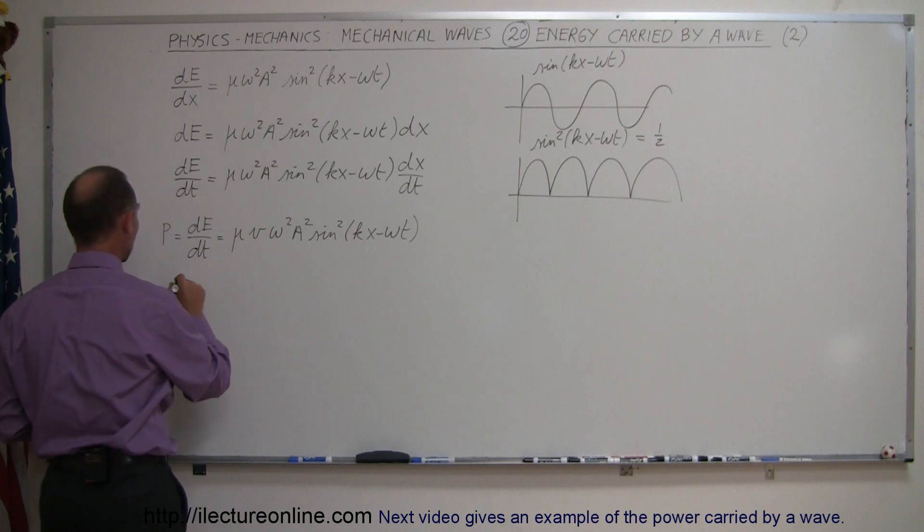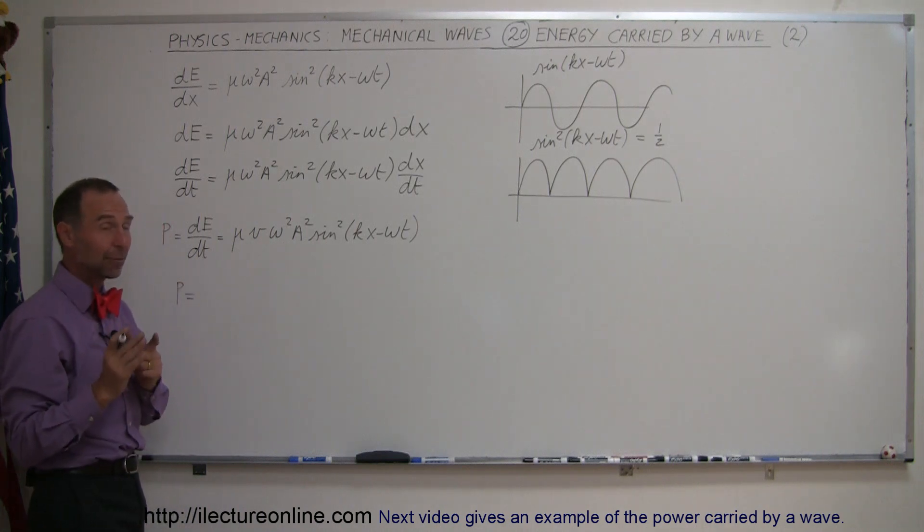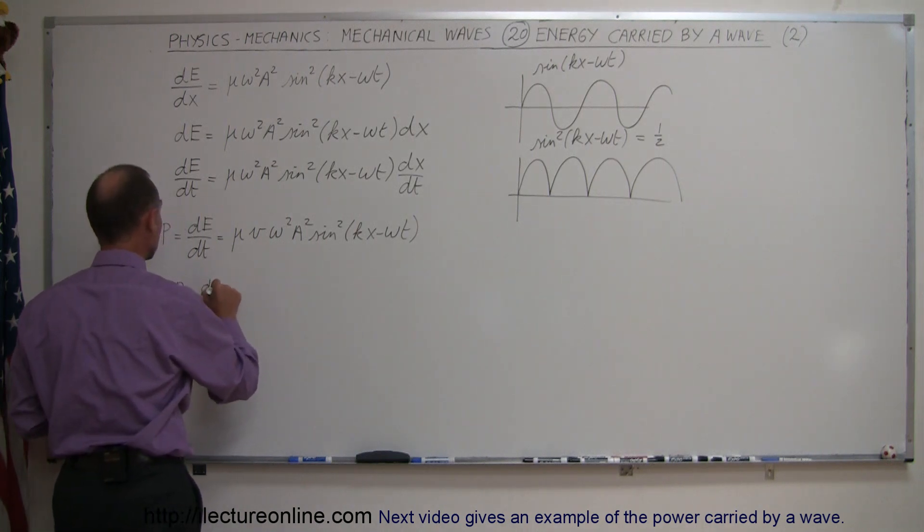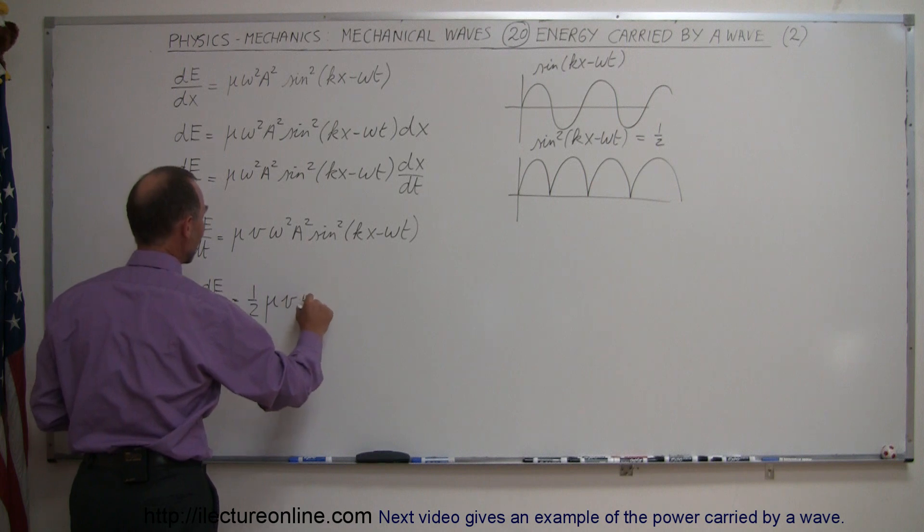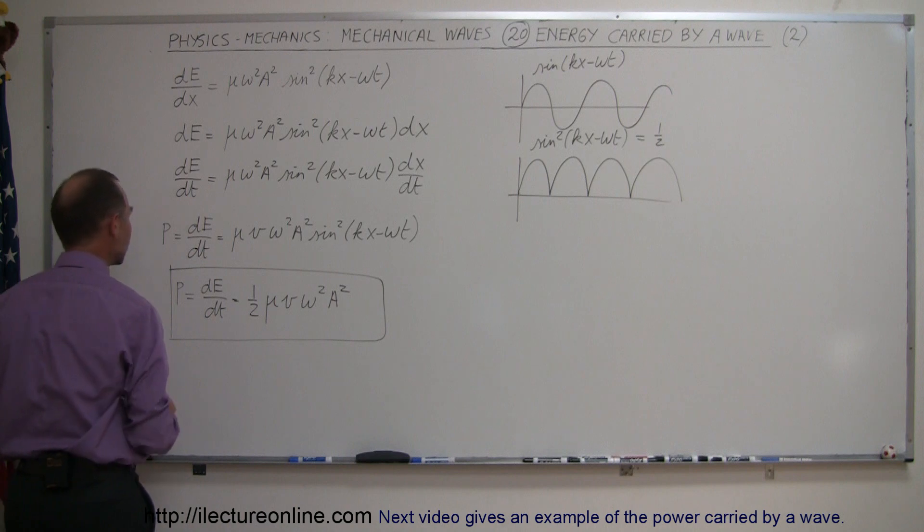Which means that the power transported, or the amount of energy per unit of time transported by a wave, the dE/dt, will be equal to one-half mu v omega squared a squared. And that is the useful part of the equation.